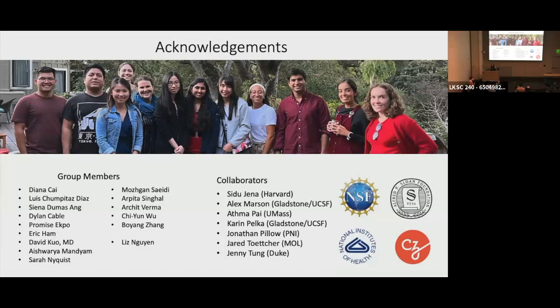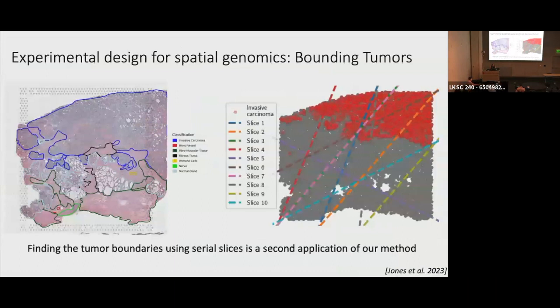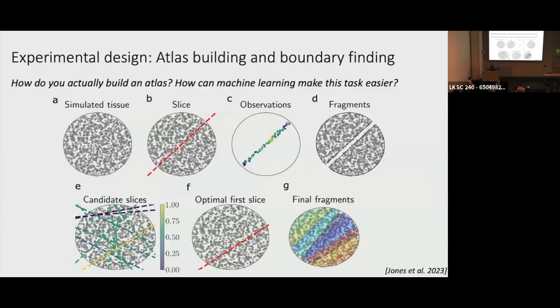Question: Given the much longer feedback loop for generating data rather than generating models, how was the process of working with experimental people, and how do you envision it moving forward? That's a great question. One thing I didn't mention is that we also have a batch or mini-batch method: whereas I described only doing a single slice, in practice experimental biologists want multiple slices — like four — they can just go do, and then do the next round. We built that into this method as well.